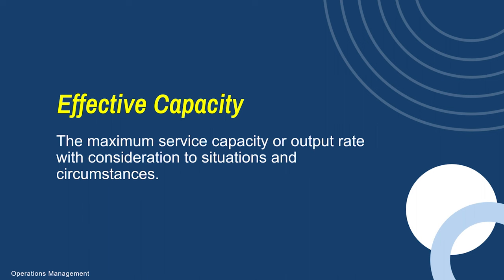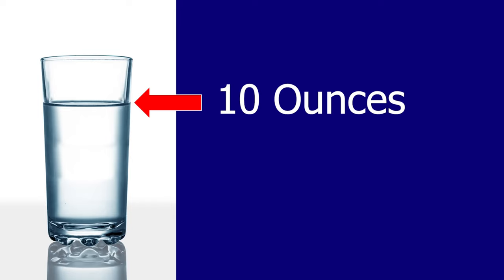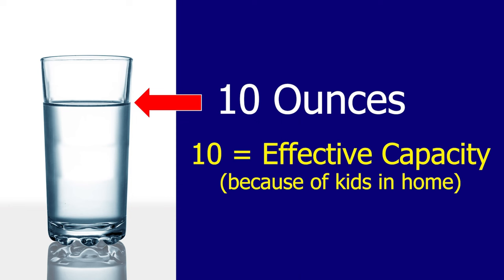We have something called effective capacity. Your effective capacity is the maximum amount that you can produce under a given set of circumstances. That can include the number of employees you have, downtime of production, equipment changeovers, and the products that you produce — all of these affect how well you can produce relative to design capacity. Using the glass metaphor, because of conditions like kids in the house, my effective capacity is probably around nine to ten ounces. If I fill it to the top — 12 ounces — and try to walk, I'm going to spill it, and that's downtime for cleaning up.